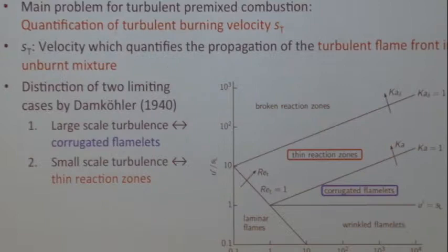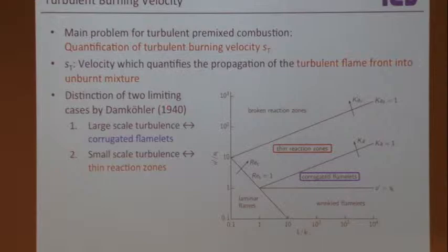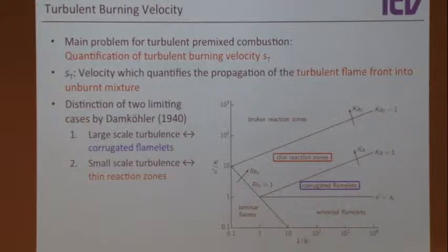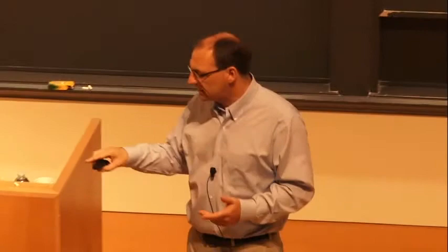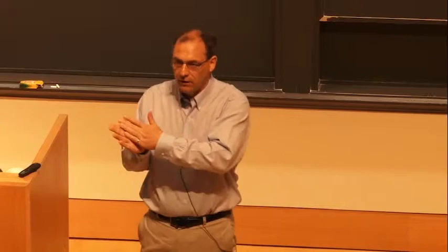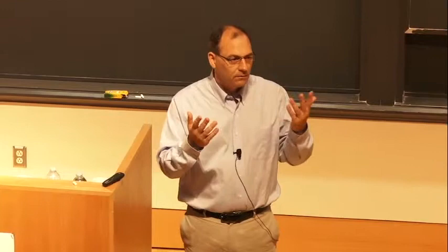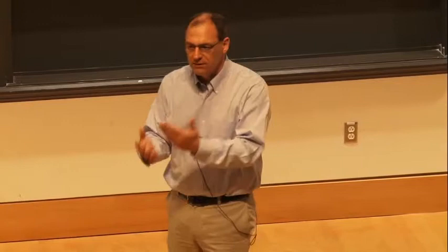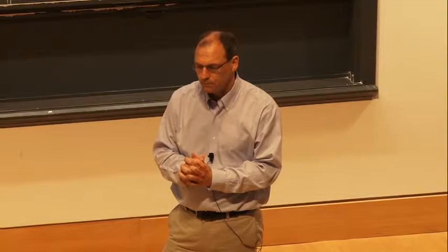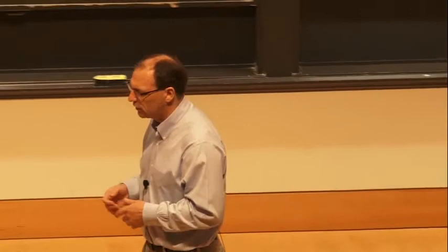We want to think about how to model the burning velocity. There are different regimes, and the physics in these different regimes are very different. In one regime you have a laminar flame that's a little corrugated; in another the whole flame structure is disrupted. These things need to be taken into account. It's very hard to have a single model applicable to non-premixed, premixed, and partially premixed combustion in all these different regimes.